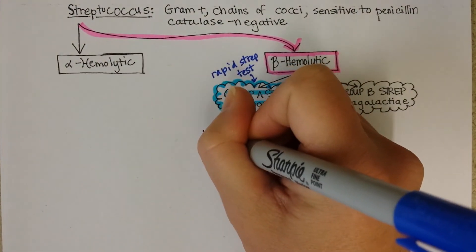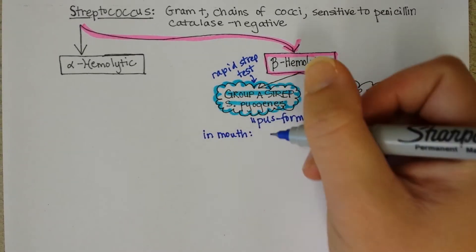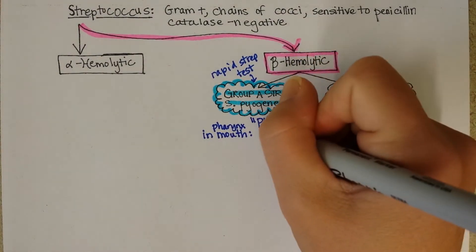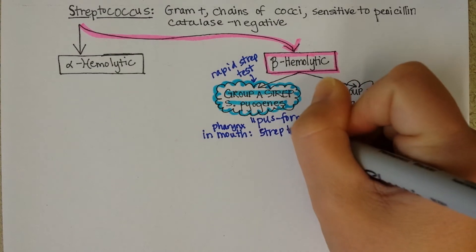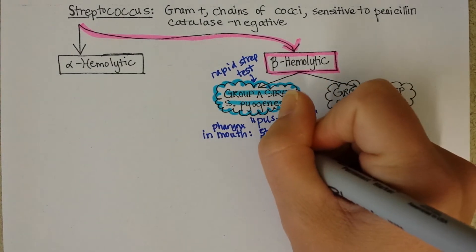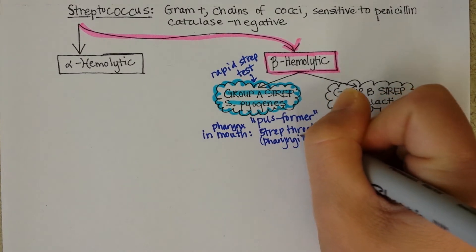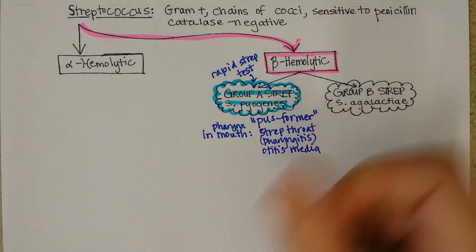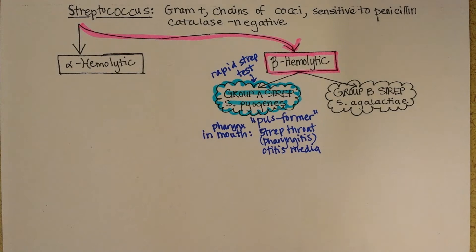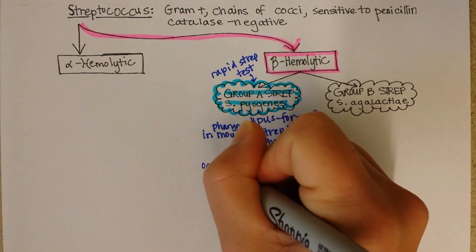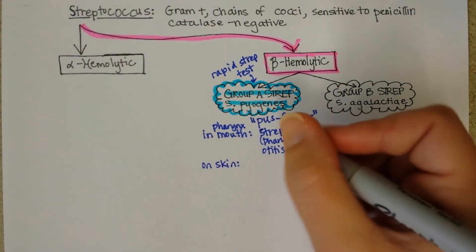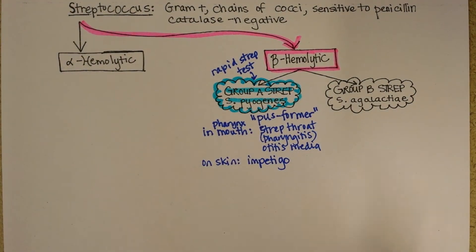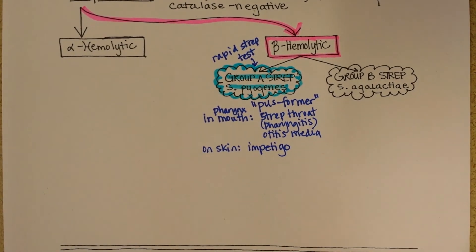On to what Strep pyogenes can cause. If it's in the pharynx — the very back of the throat — that can cause strep throat, or pharyngitis, which is the more proper name. It can also cause ear infections, which is definitely not uncommon. On the skin, it can cause impetigo, which is a skin rash that can cause sloughing and death of the skin.